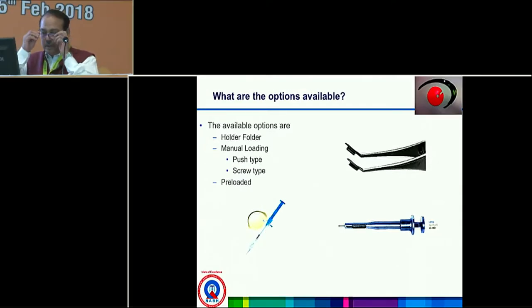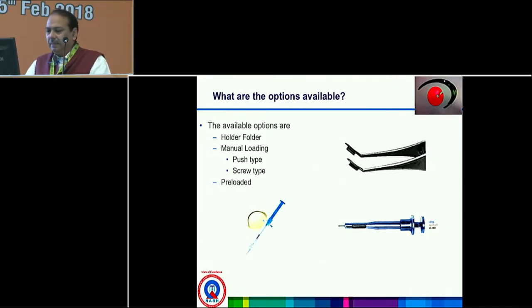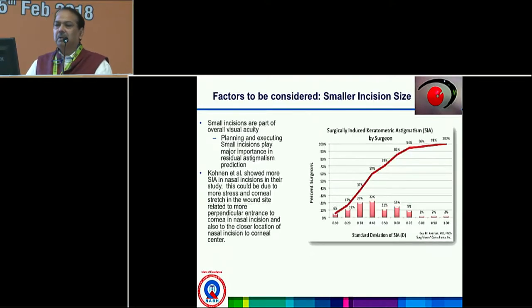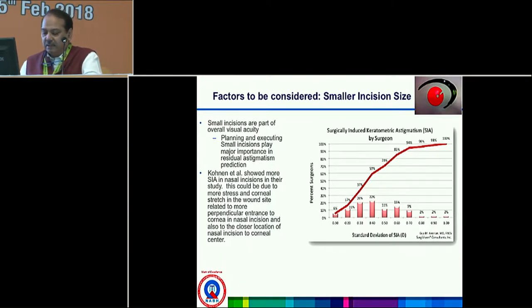Dr. Bharti from Delhi will speak about what an ideal IOL should be. He will be talking about new lenses, especially the new NIDAC lens, which he has used in nearly 1,000 lenses with pleasing results. Factors to be considered: first is small incision size. Small incisions are part of overall visual quality because surgeon-induced astigmatism is smaller with smaller incisions — 1.8mm or smaller would create the least amount of astigmatism.